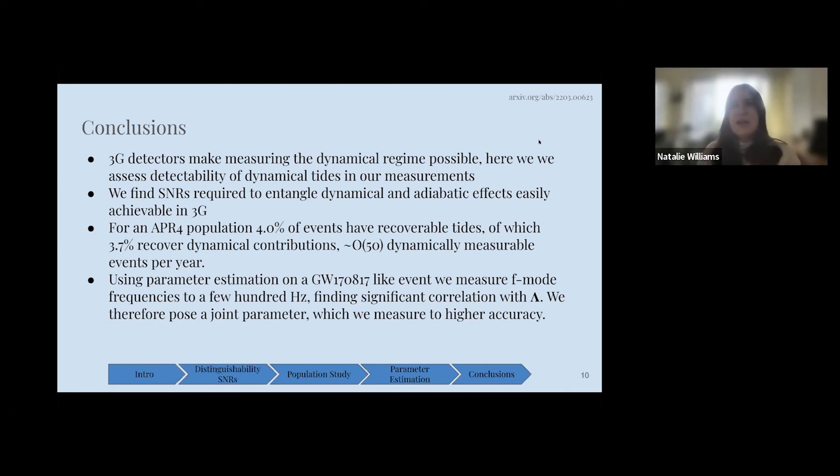I don't think it will. In our parameter estimation, even though we've used universal relations in the parts beforehand, which do assume different equation of state information, when we do our parameter estimation, we're not using those universal relations. When we make the waveform model, we are using them, but when we're doing the parameter estimation, we're looking at these things completely independently. So there shouldn't be any biases on our knowledge of the equation of state. The only thing that might come into it is our priors. Using wide enough priors into what we believe should contain the true one, I don't think it should have a massive impact.